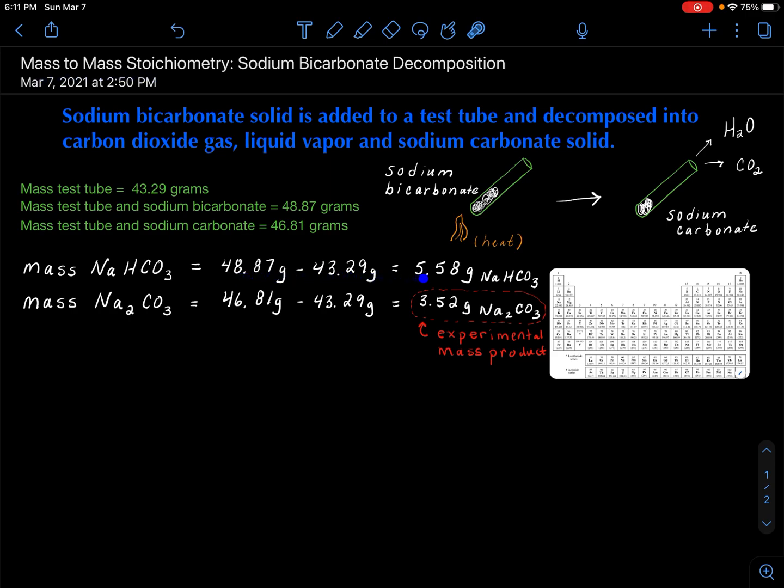I've already calculated the mass of the sodium bicarbonate that I had initially in the test tube that I heated. And then I calculated the mass of my solid product, which I hope to prove was sodium carbonate. So this is called the experimental mass, and I'm not going to use it in any calculation. I'm just going to use it to compare to prove that it indeed was sodium carbonate.